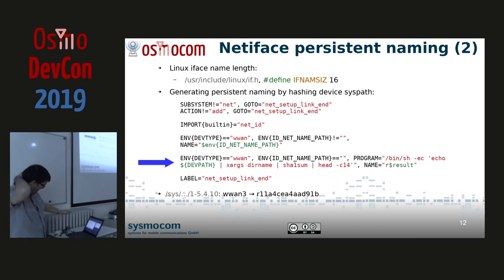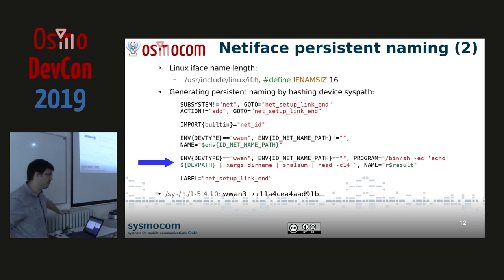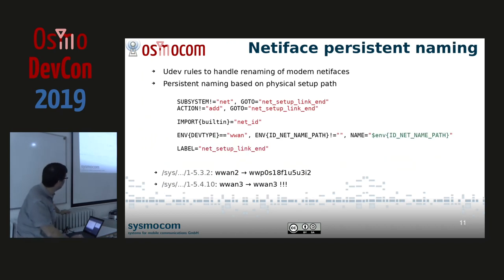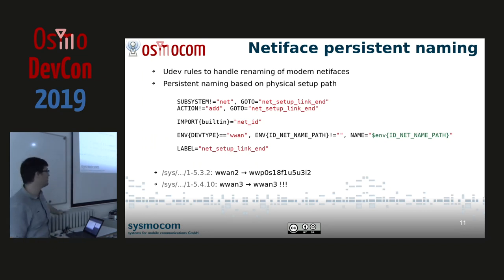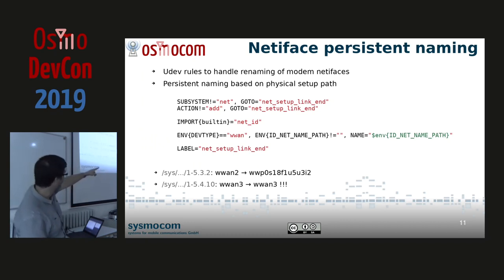The problem is that Linux defines IFNAMSIZ as 16, which is the maximum name length an interface can have in Linux. As you stack up hubs in USB, your tree becomes larger, your path becomes larger, and eventually you can't fit that into the persistent naming scheme. When the path is too long, net_id detects it and ID_NET_NAME_PATH won't be set — it will be empty. So the rule is not applied: systemd udev detects the path is going to be too long, so it doesn't work.